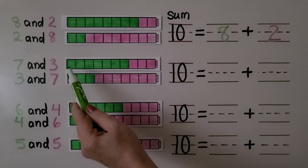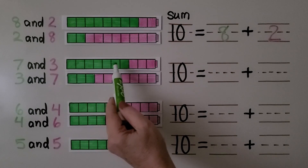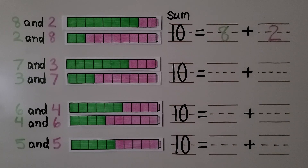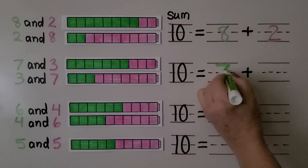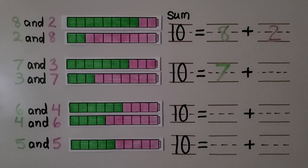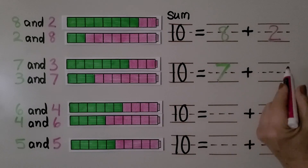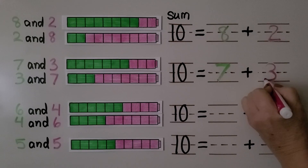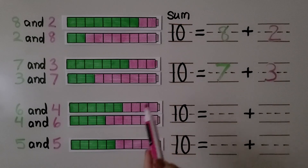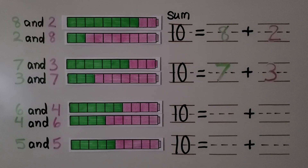We can count these green ones: one, two, three, four, five, six, seven — we write seven. We can count the pink ones: one, two, three — we write three. Ten is equal to seven plus three. We can also say three plus seven because the order doesn't matter.